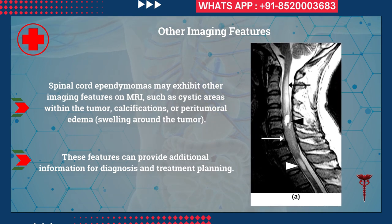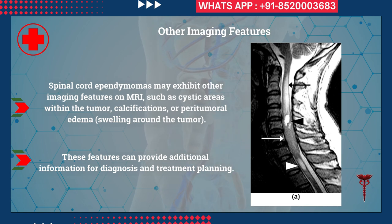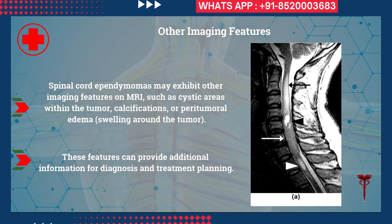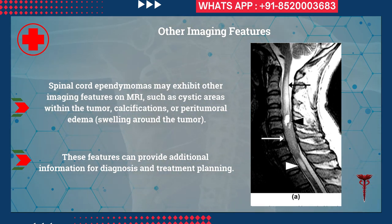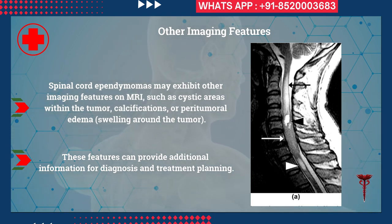Spinal cord ependymomas may exhibit other imaging features on MRI, such as cystic areas within the tumor, calcifications, or peritumoral edema — swelling around the tumor. These features can provide additional information for diagnosis and treatment planning.